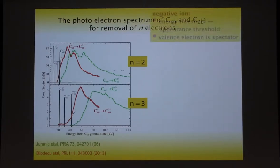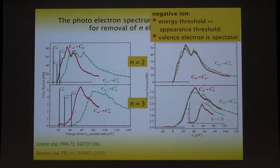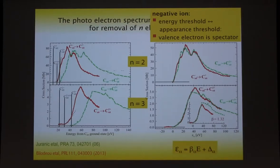What does the spectator electron do? It essentially scales the energy axis. If you stretch the energy axis the right way and shift by the appearance threshold difference, you get a result that is essentially identical for the negative ion and neutral one after scaling. The theoretically predicted scaling agrees well with the free fit. There's a bit of freedom in the experimental scaling since they don't know exactly where the zero threshold is, but it is remarkably similar — really a linear transformation of the energy axis, a stretching plus a threshold shift.